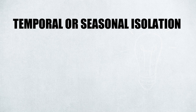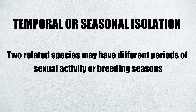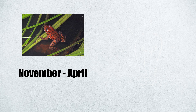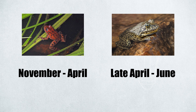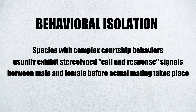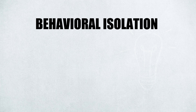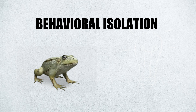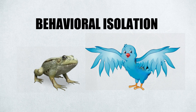Second is temporal or seasonal isolation. This occurs when two related species may have different periods of sexual activity or breeding seasons. The red-legged frog breeding season lasts from November until April, while the yellow-legged frog breeding season lasts from late April until June. Another would be behavioral isolation — species with complex courtship behaviors usually exhibit stereotyped call-and-response signals between male and female before actual mating takes place, such as frogs croaking at night or birds dancing to attract a mate.